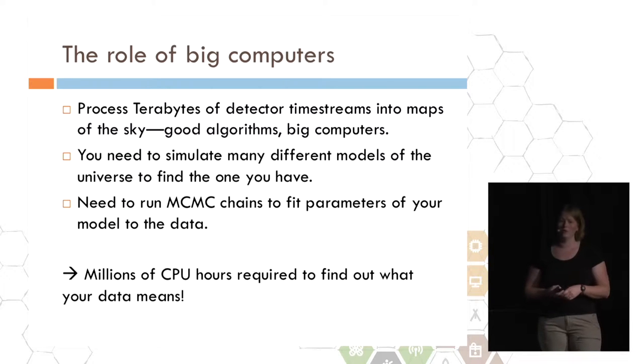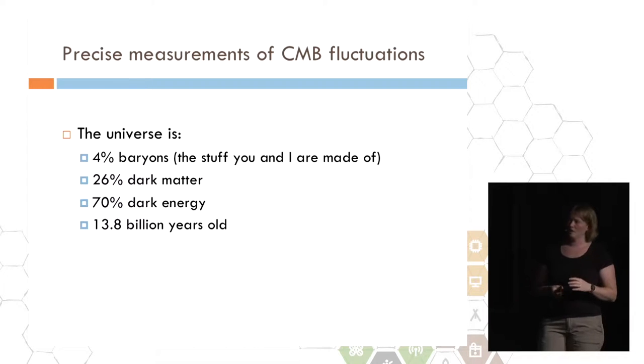Even if you had these amazing background limited detectors in the 1950s, you never would have gotten the results about what the universe is made of, because there's no way you would have been able to do the computations to find out. From these super sensitive measurements, our calculations, our simulations, we've found that the universe is 4% baryons—that's what you and I are made of, the Earth, the stars, everything you can see—26% dark matter, 70% dark energy, which we have no idea what it is, and the universe is 13.8 billion years old. That's something that you can find out simply by measuring the fluctuations of a very uniform signal from 13.8 billion years ago. Kind of cool.